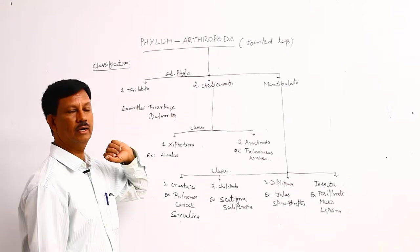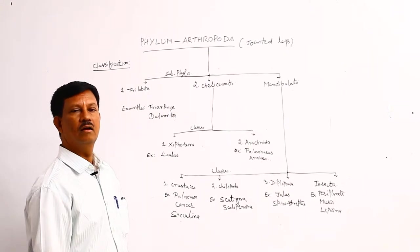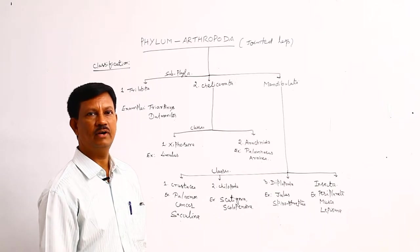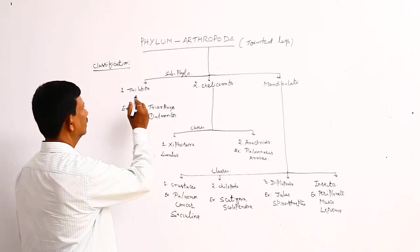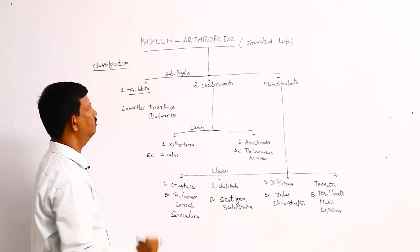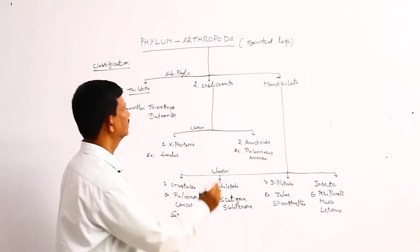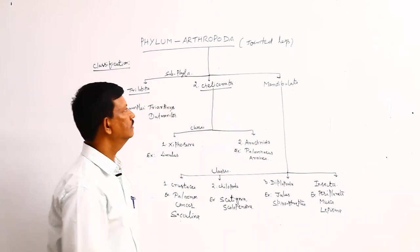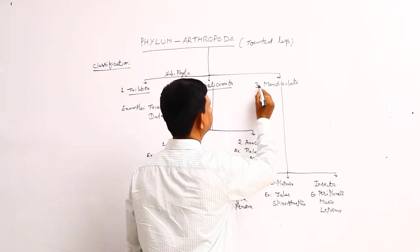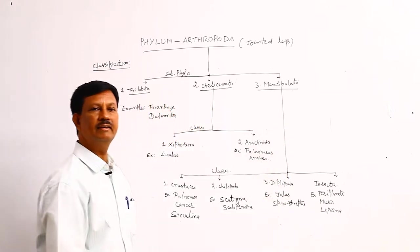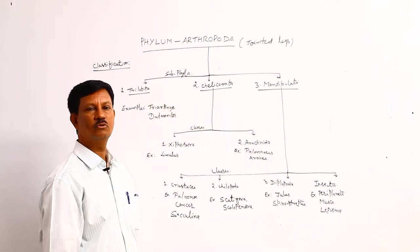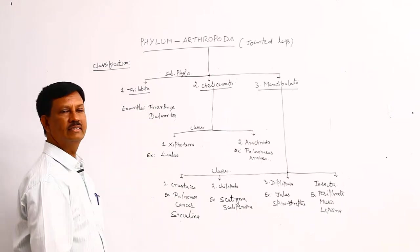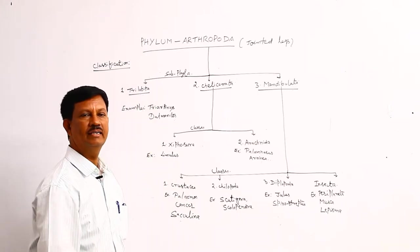Classification of the phylum Arthropoda. Arthropoda phylum is divided into three sub-phyla: number one Trilobita, Chelicerata, and Mandibulata. These are the three phyla included in the phylum Arthropoda. Trilobita is extinct forms.